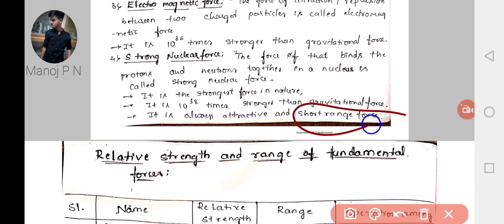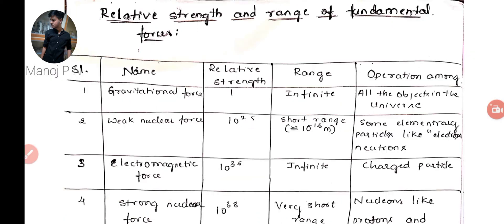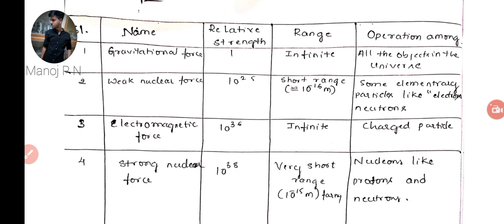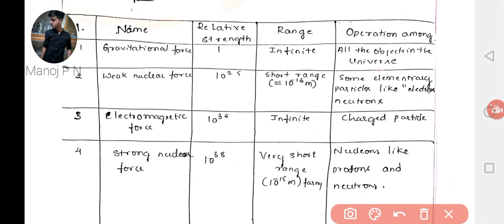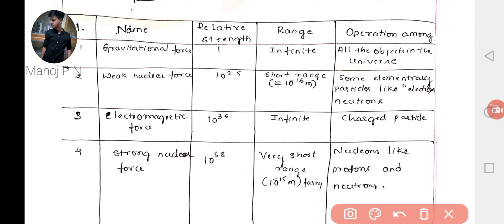Let us now look at the summary table of the four fundamental forces, covering their relative strength, range, and what they operate among. The table has five columns: serial number, name, relative strength, range, and operation among. First, gravitational force has a relative strength of 1, its range is infinite, and it operates among all objects in the universe.